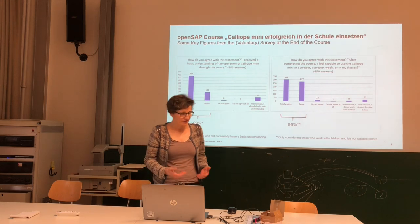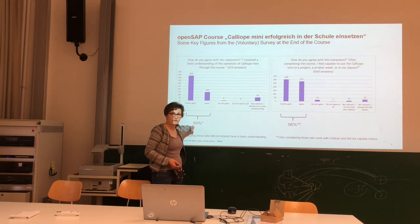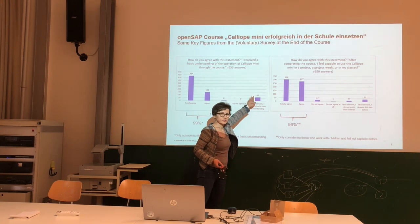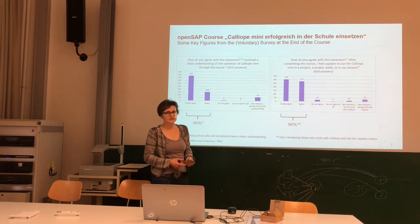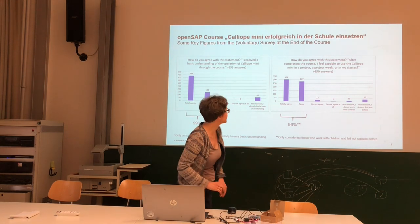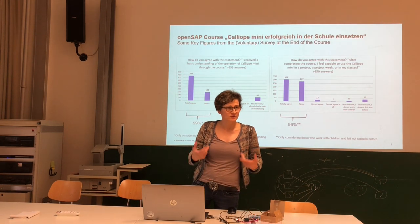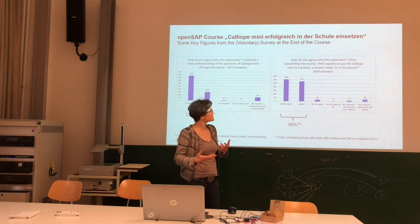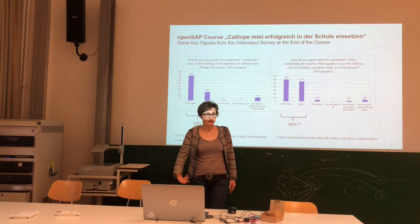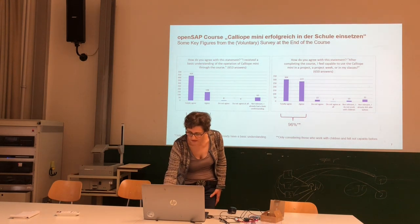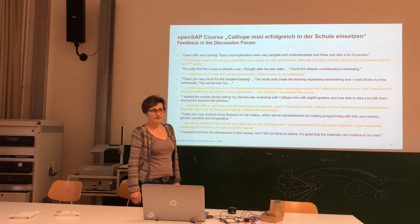Around 600 participants answered the voluntary survey. The first question was: do you now feel that you can operate such a Calliope Mini? Excluding those who already knew the device, 99% said yes, they felt they could operate it. The next question was: can you also work with children in a course or project using this device? Here we had 96% who said yes. We found that a really good result, and we also received a lot of very nice written feedback in the discussion forum.